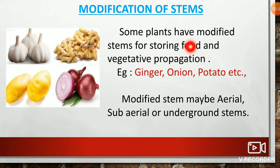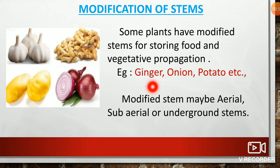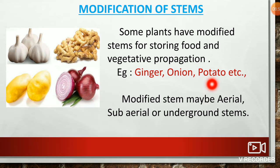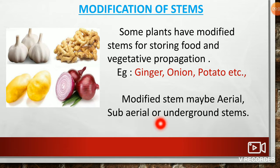Some plants have modified stems for storing food and vegetative propagation. For example, ginger, onion, and potato. Modified stems may be aerial, subareal, or underground stems. Let us discuss about these stems in detail.